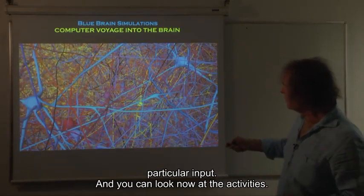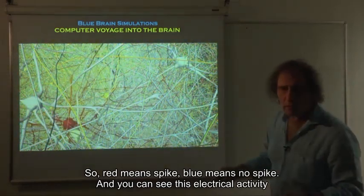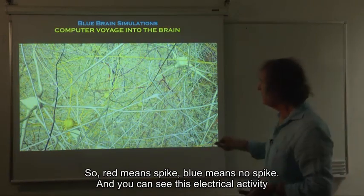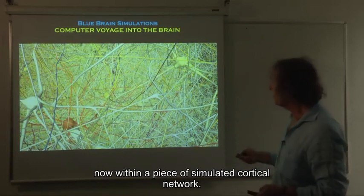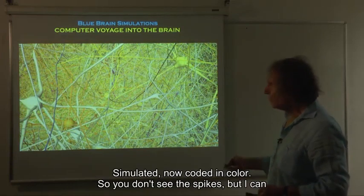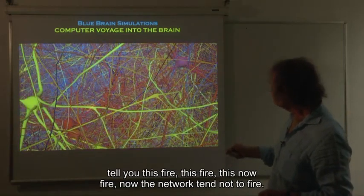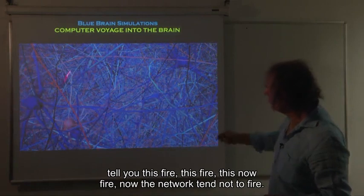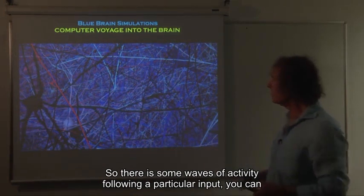And you can look now at the activity. So red means spike. Blue means no spike. And you can see this electrical activity now within a piece of simulated cortical network. Simulated, now coded in color. So you don't see the spikes, but I can tell you this fired, this fired, this now fired. Now the network tends not to fire.